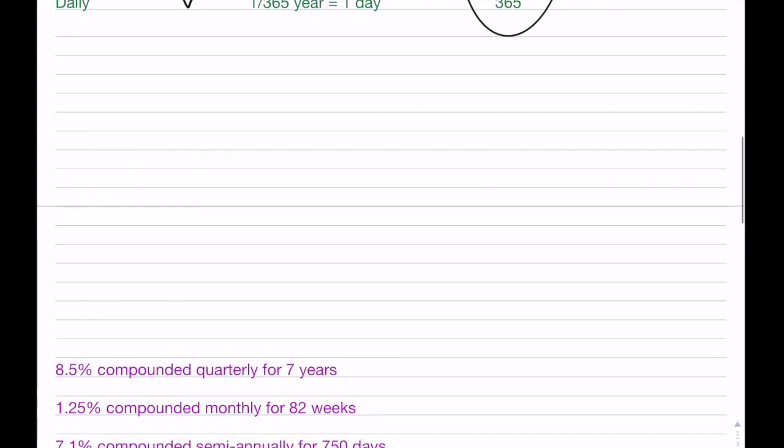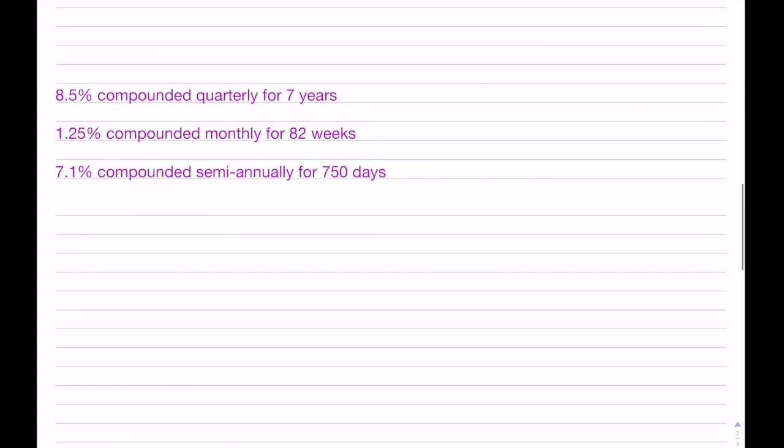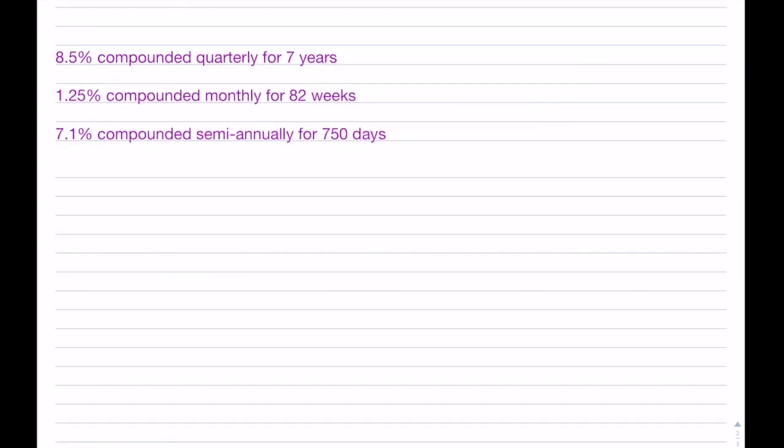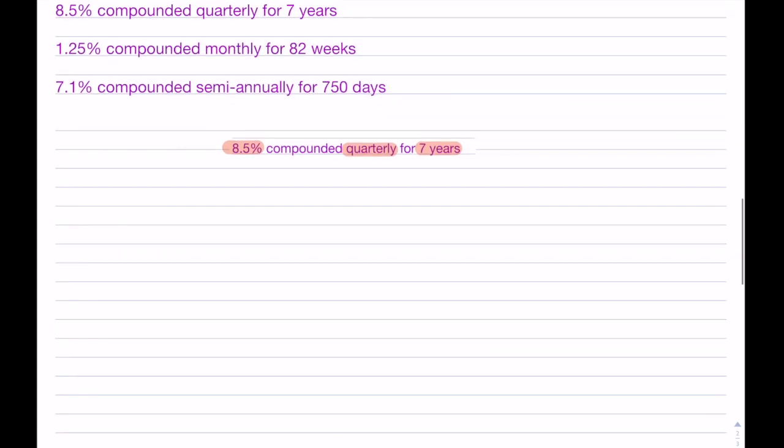So if you were given, for instance, something like this, let's take our first example here. I'm going to bring it down. We have 8.5% and we were compounding quarterly for 7 years. So how would we find the compounding factor? I always like to always write down, well, first, what is M? Well, it's quarterly, so M is going to be 4.